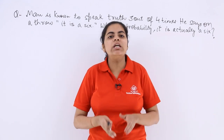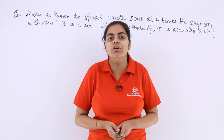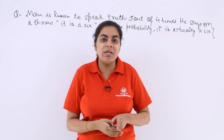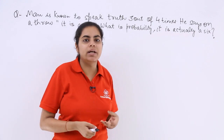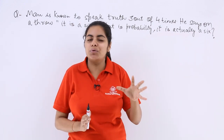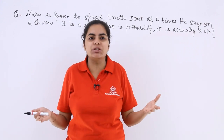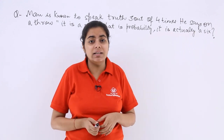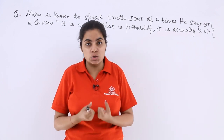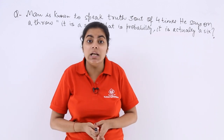This question was asked in the CBSE examination of 2005 and 2011, and also appears in your NCERT books. The question says a man is known to speak the truth 3 out of 4 times. So out of 4 surveys taken, only 3 times the man was seen speaking the truth and once he said a lie. That means 3/4 is the probability of his speaking the truth, and 1/4 is the probability of his speaking a lie.